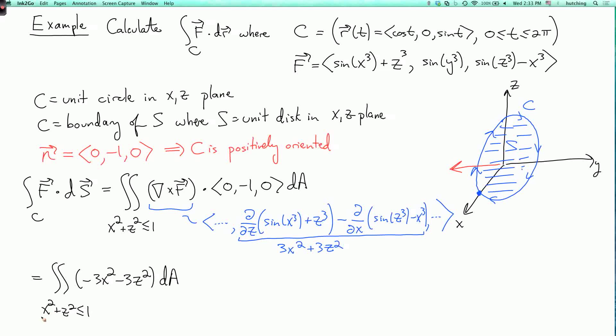I mean, this is x and z, but you could think of this as x and y. You could change z to y everywhere. And then this becomes a standard polar coordinate integral where θ goes from 0 to 2π, and r goes from 0 to 1. And my integrand is -3r².